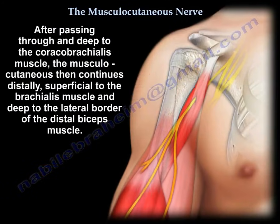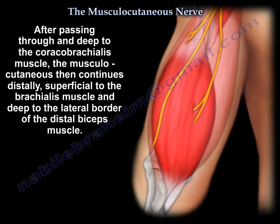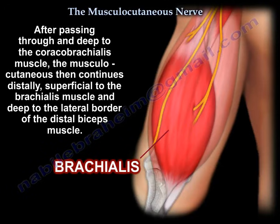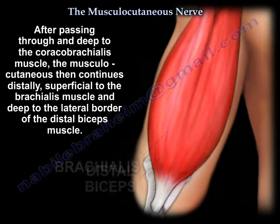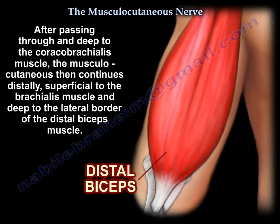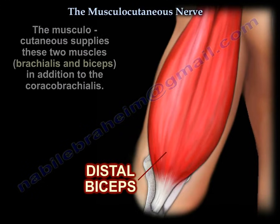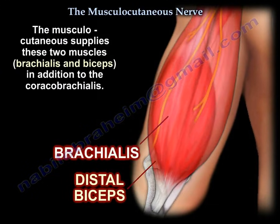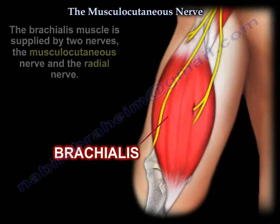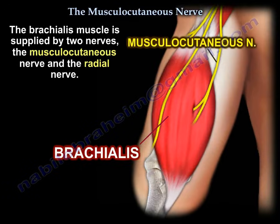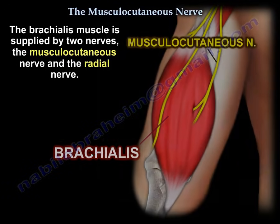After passing through and deep to the coracobrachialis, the nerve continues distally, superficial to the brachialis and deep to the lateral border of the biceps. It supplies these two muscles. Basically, this nerve supplies the anterior muscles of the arm. Note that the brachialis muscle is supplied by two nerves: the musculocutaneous and the radial nerve.